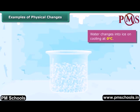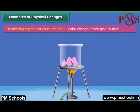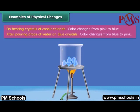On heating water, the chemical composition of water remains the same. Let us take crystals of cobalt chloride, which are pink in color. On heating, these crystals change to blue. When some drops of water are poured on the blue crystals, they regain their pink color.